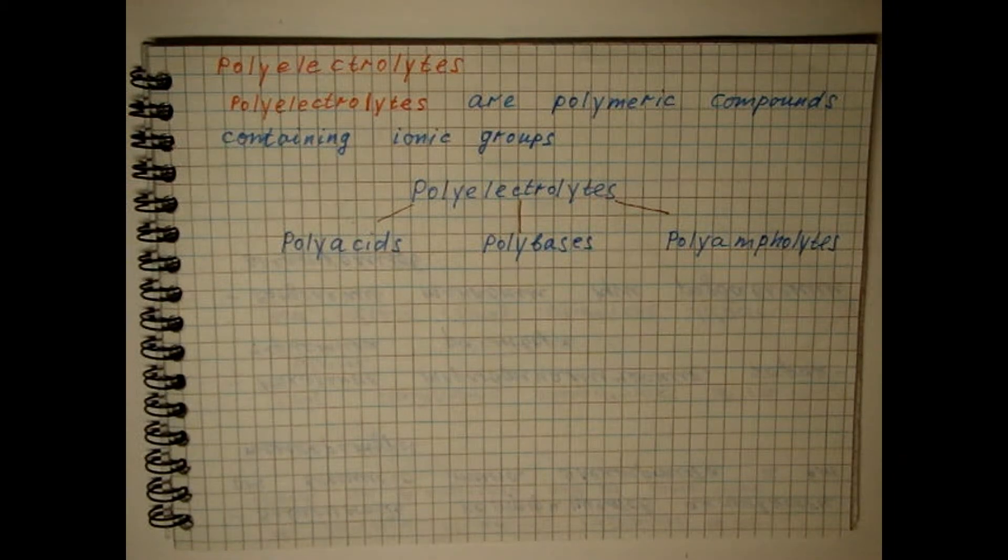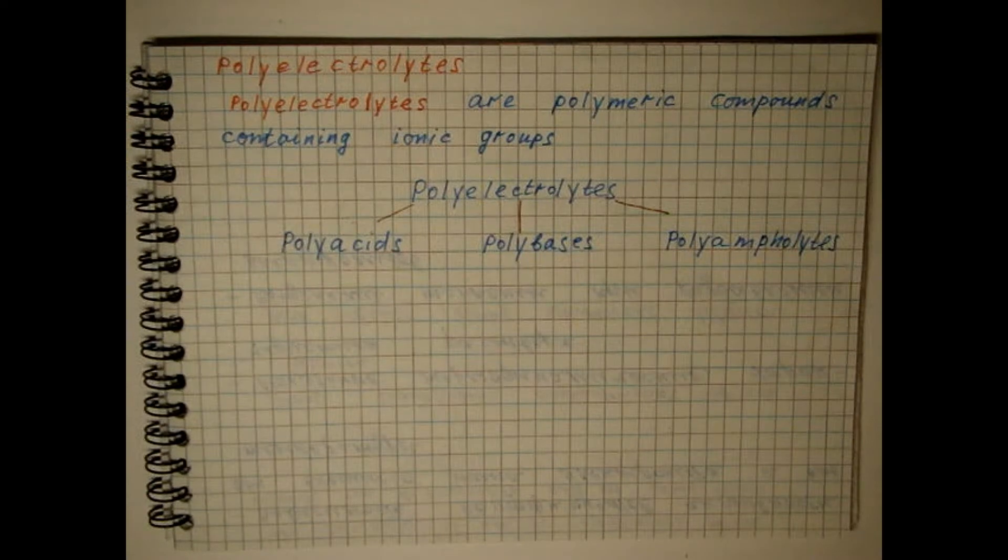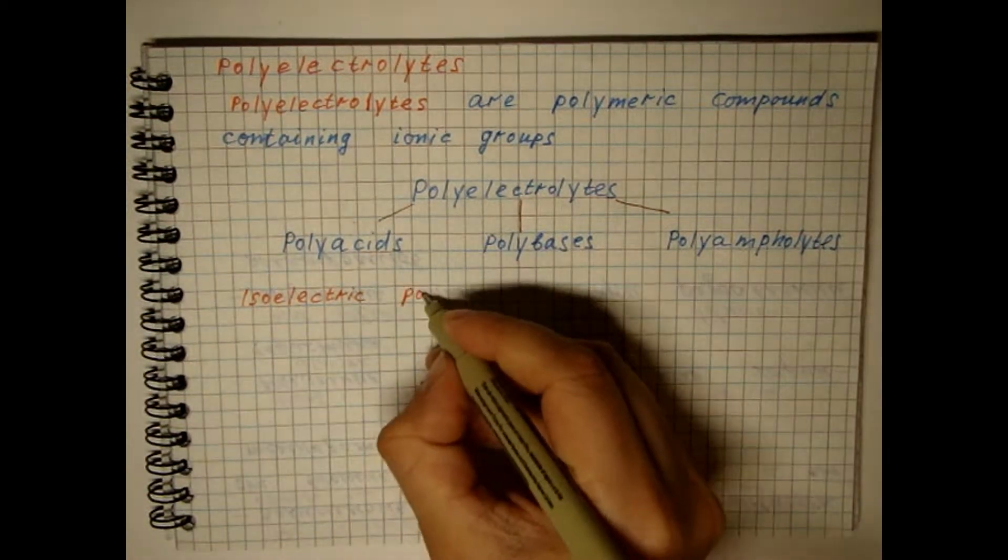The chain of polyamphylites contains acidic and basic groups. The example of such compounds is a copolymer of metacrylic acid and 4-vinylpyridine. The total charge of polyamphylitic macro-ions depends on the pH of the solution and changes signs at the isoelectric point.